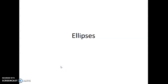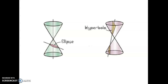Today we're going to be looking at the next topic for conic sections, which are ellipses. Ellipses are found when you take the two cones that are pointing at each other and take a slice that is kind of a diagonal that goes out of each side of a cone.